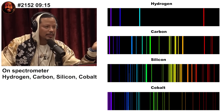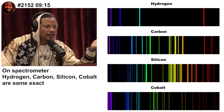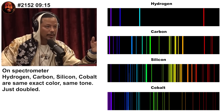He says it's the same exact color, same tone, just doubled. But the four wavelengths of hydrogen have four corresponding frequencies, while carbon, silicon, and cobalt have dozens of frequencies. How are these the same?